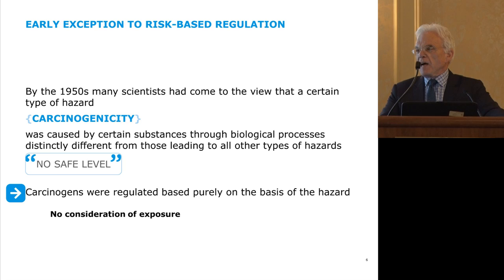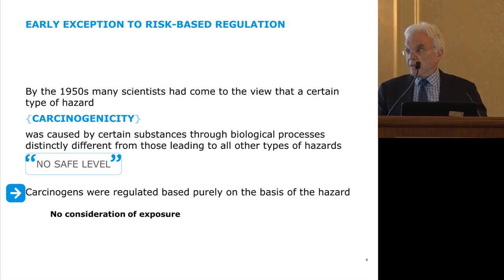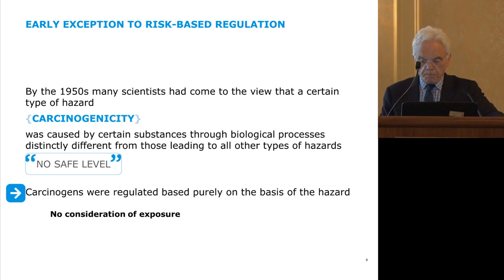There is part of food law called the Delaney Clause in the U.S., developed in the 1950s, which says carcinogens were especially dangerous materials for which it was impossible to define safe levels — that's in the language of the legislation. If something turned up to be an animal or human carcinogen, and this law still applies in some contexts, it could not be deliberately added to food. That's a hazard-based decision — based purely on knowledge that the material has a cancer property, nothing to do with exposure or risk.